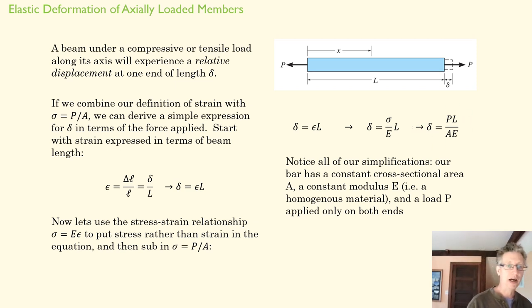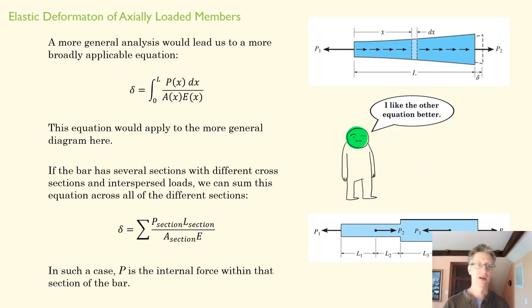Now, notice that we've assumed here a bunch of stuff that we assumed in coming up with this equation and coming up with that equation. That is that we're in the yield part of the stress-strain diagram. We have a constant modulus E, constant cross-sectional A, and a load that's applied only on both ends.